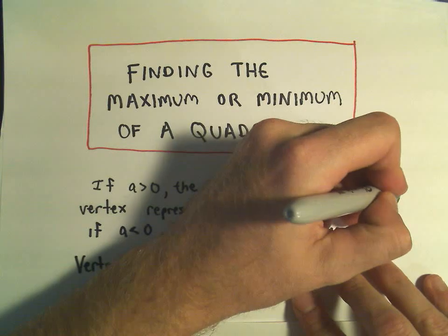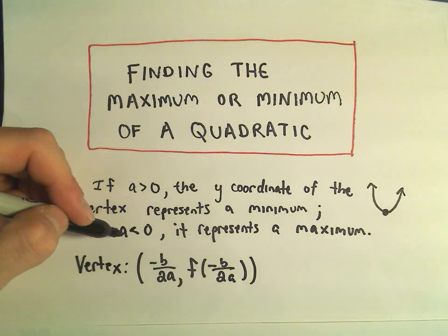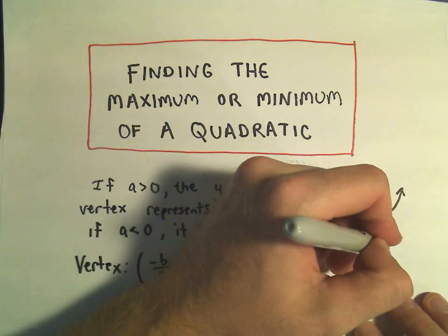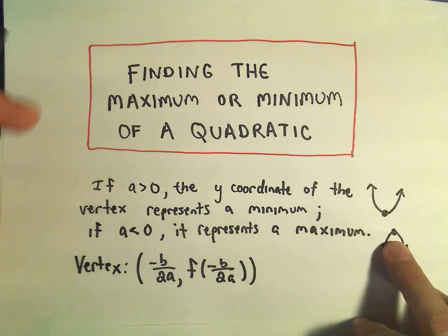the y-coordinate of the vertex is going to be a minimum, and that makes sense because if a is greater than zero, it's opening up, so that vertex is going to be the smallest value. If a is less than zero, it's going to be a maximum, again because then it's opening downwards, so you're going to have a highest point,